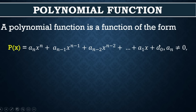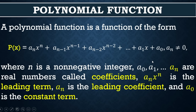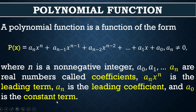Here, n is a non-negative integer, and a₀ through aₙ are real numbers called coefficients. The term aₙxⁿ is the leading term — the first term in standard form. The coefficient aₙ is called the leading coefficient, and a₀ at the end is called the constant term.